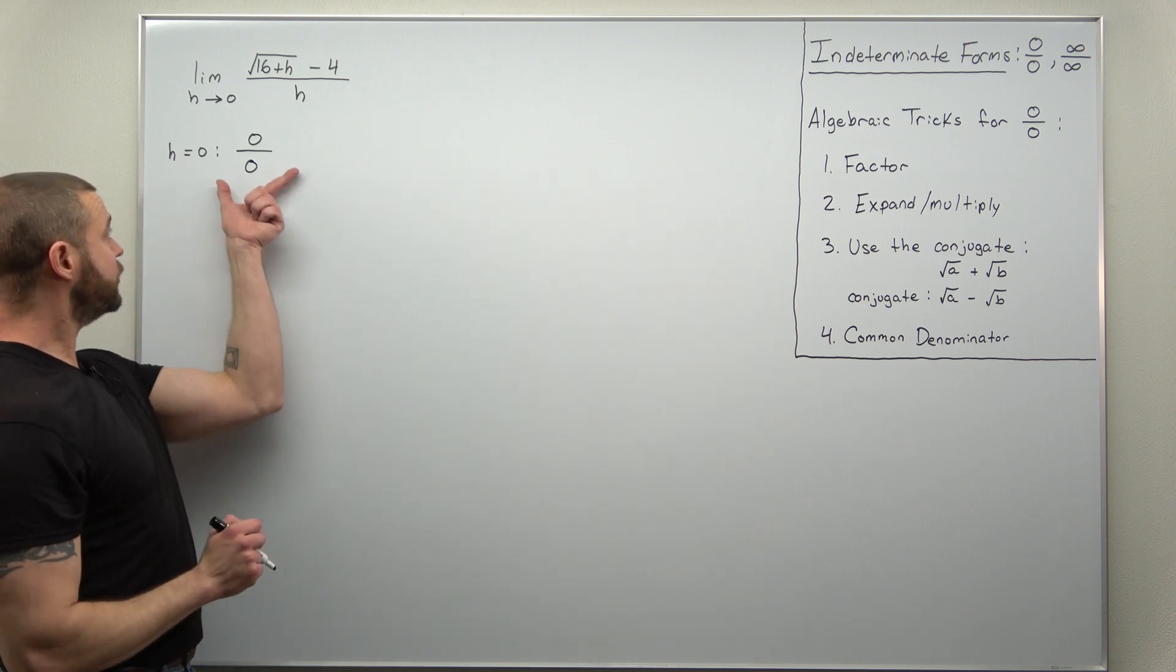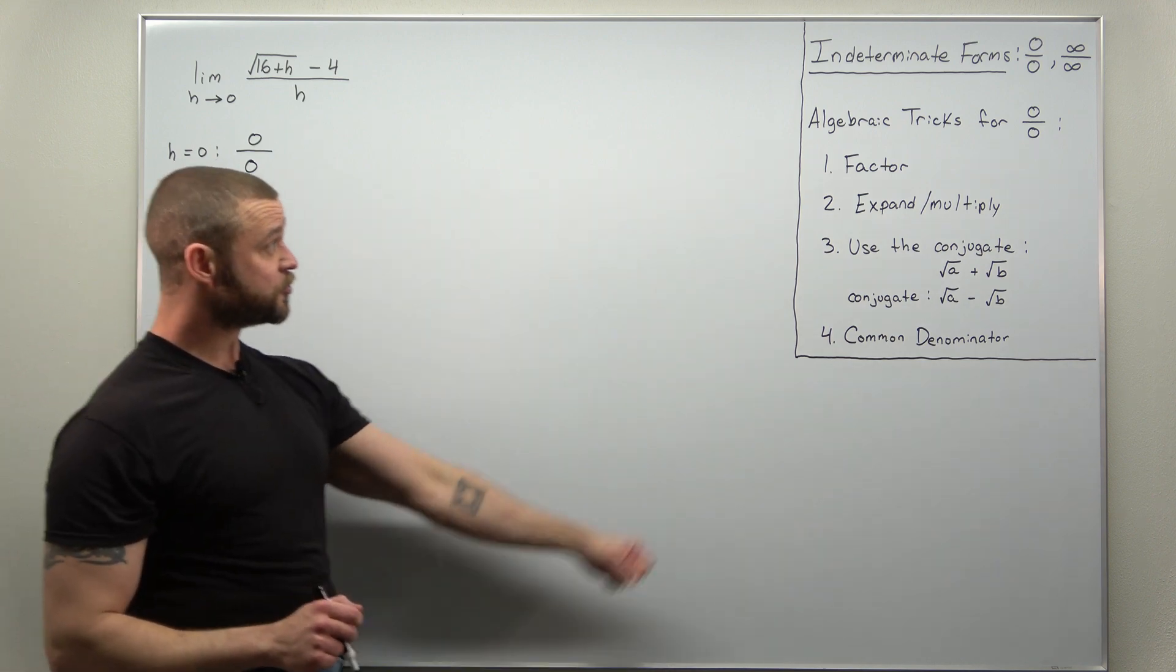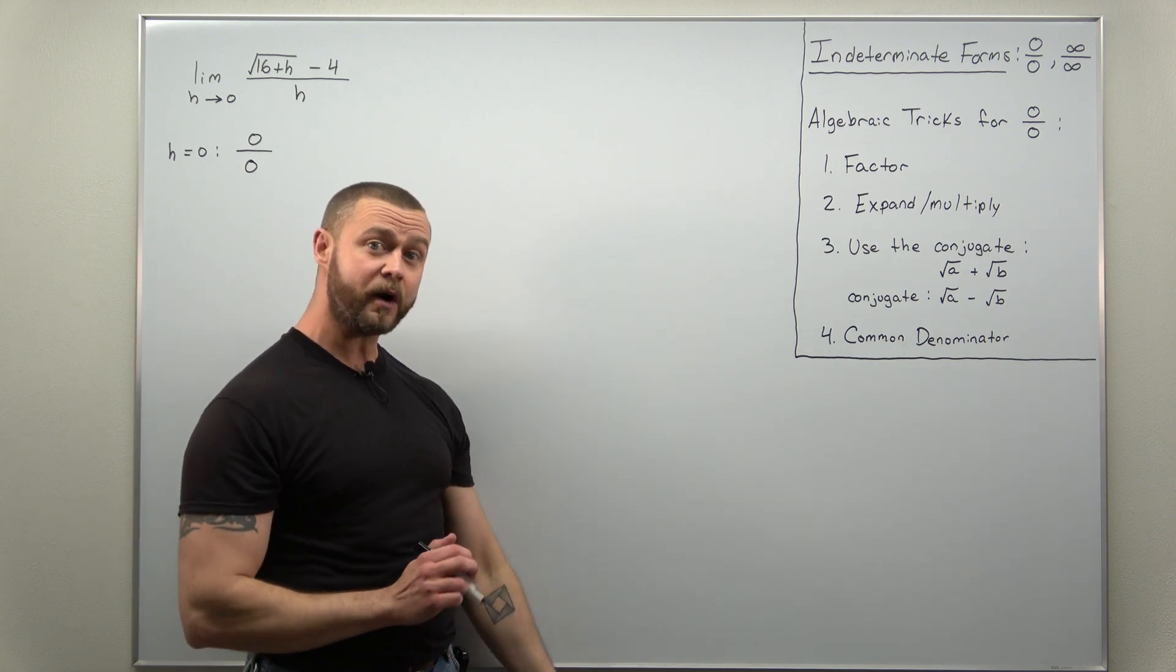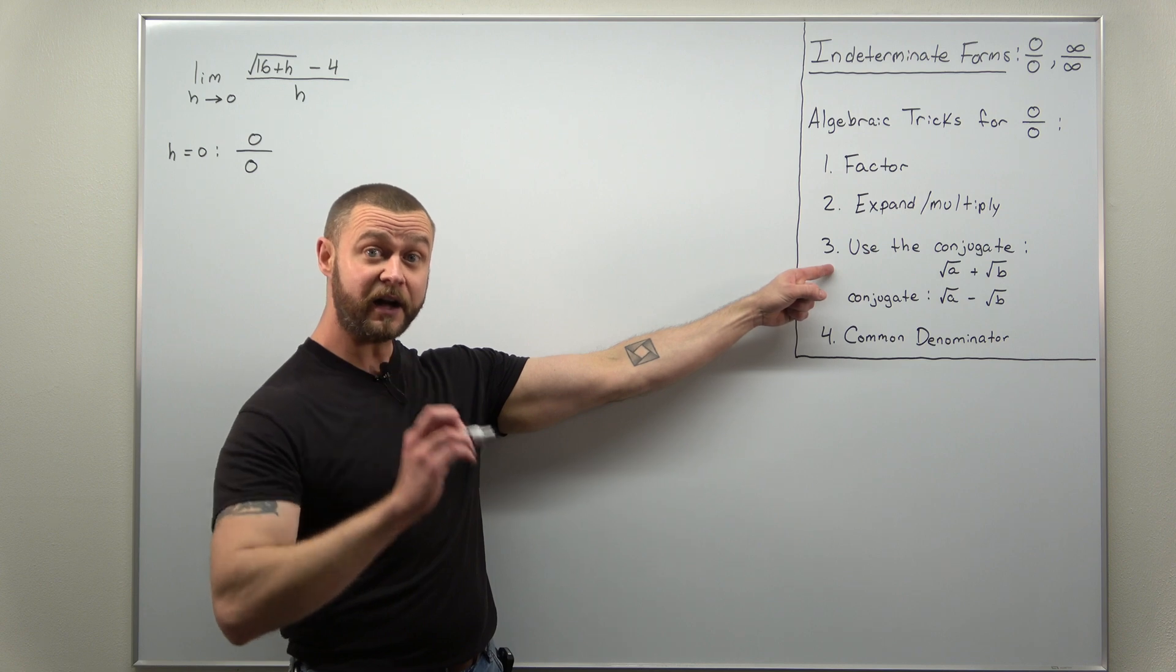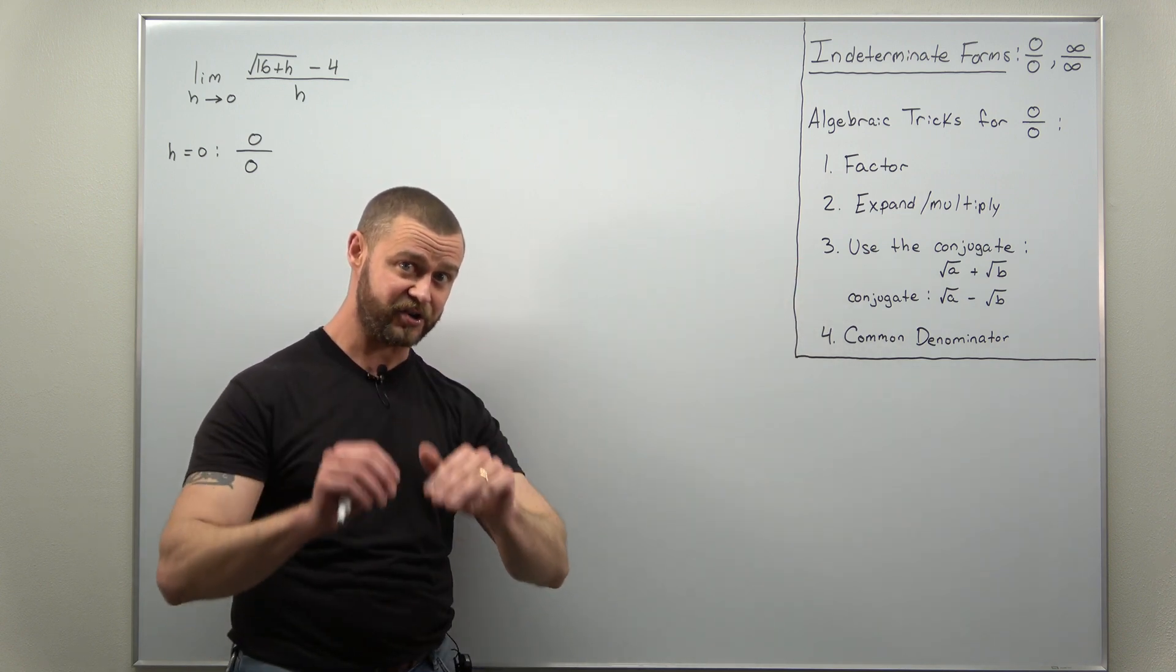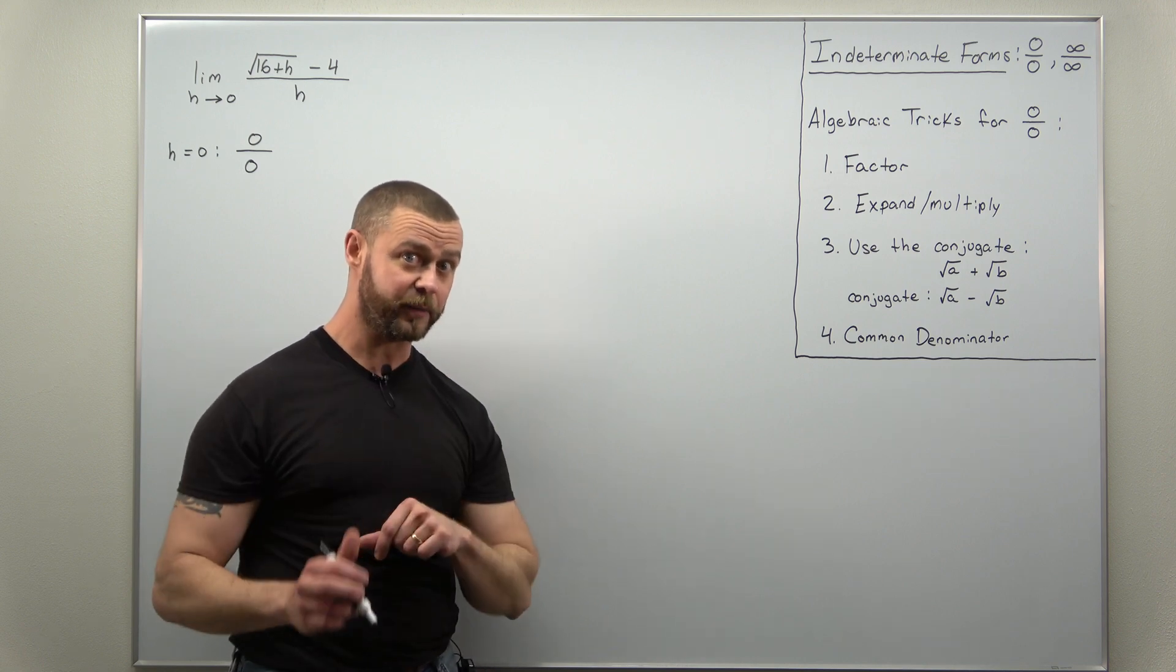And that's our clue or suggestion to try an algebraic trick, and almost always when you have square roots, you can use the conjugate, multiplying the numerator and denominator by the conjugate to eliminate the indeterminate form.